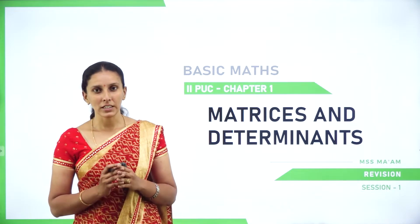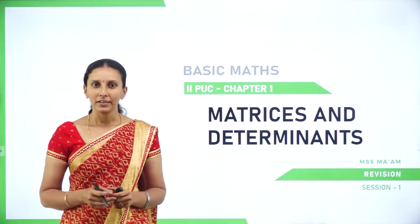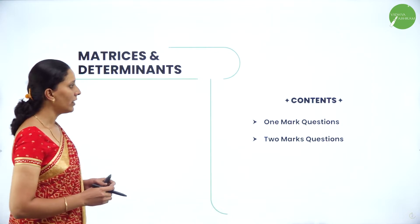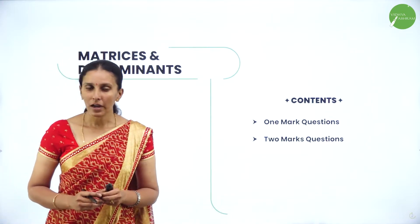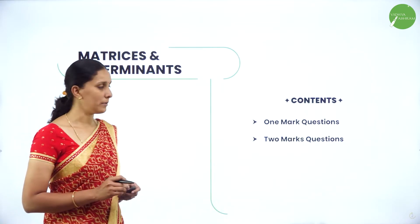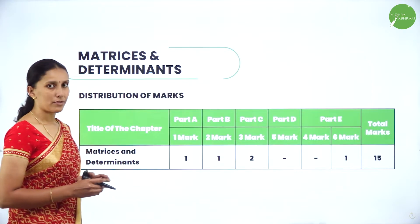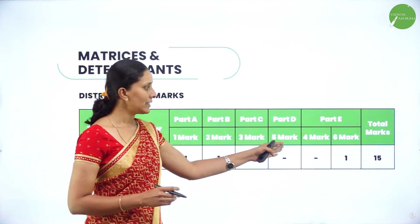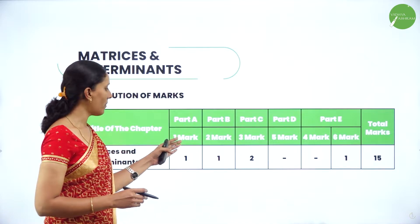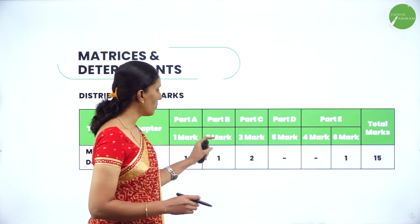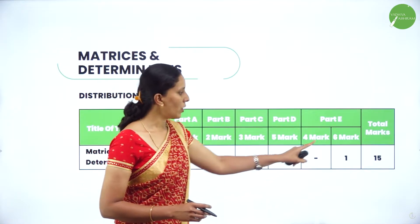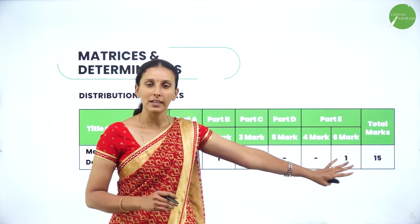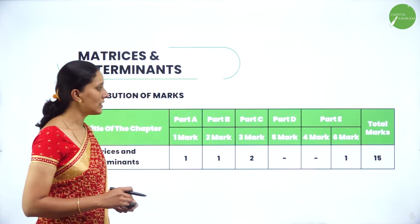We are going to see the distribution of marks in the chapter, and then we will solve a few problems related to the type of questions. We will discuss one-mark and two-mark questions from matrices and determinants. The distribution of marks is: you have five sections in your question paper — Part A, B, C, D, and E. Part A is one mark. You have one one-mark question, one two-mark question, two three-mark questions, and one six-mark question from matrices and determinants. This is the chapter with the highest marks, hence it is very important.